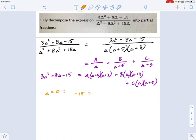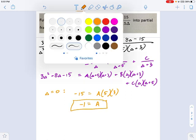Negative 15 equals A times 0 plus 5, 0 plus 3. So in other words, A equals negative 1. Great. That's one solution.